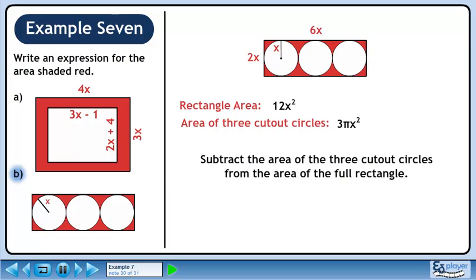Subtract the area of the 3 cutout circles from the area of the full rectangle. This gives the answer 12x² minus 3πx².